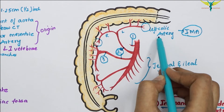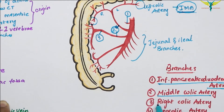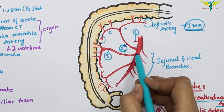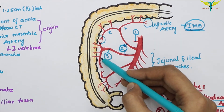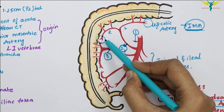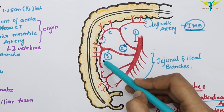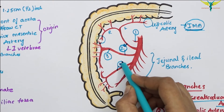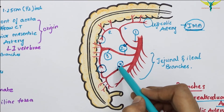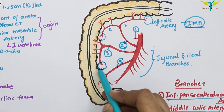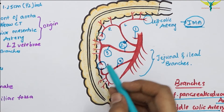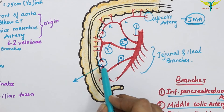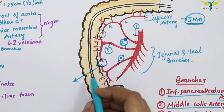The third branch is the right colic artery. It arises from the right side and divides into ascending and descending branches. The ascending branch anastomoses with the right branch of the middle colic artery, and the descending branch anastomoses with the ascending branch of the ileocolic artery. This anastomosis forms the beginning of the marginal artery of Drummond — a very important anatomical landmark.